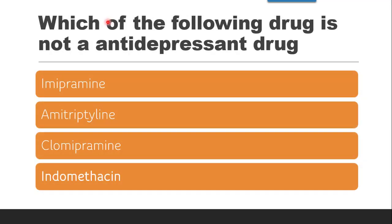Next question: Which of the following drugs is NOT an antidepressant? Options are imipramine, amitriptyline, clomipramine, or indomethacin. Imipramine, amitriptyline, and clomipramine all belong to the tricyclic antidepressant class. Only indomethacin is not an antidepressant drug. So the correct answer is indomethacin.